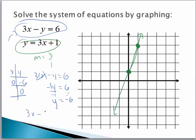Y equals -6. Then I plug 0 for y. 3x minus 0 equals 6. That goes away. 3x equals 6. Divide both sides by 3, and you get an x value of 2.